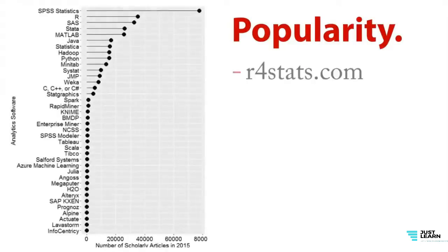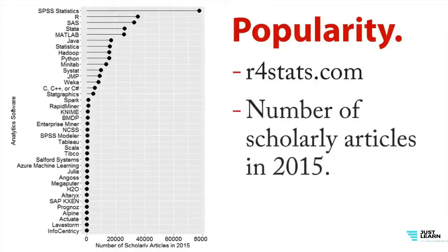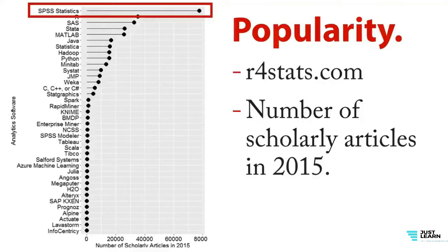One important thing to know is how popular SPSS is. Here's a chart from the excellent website r4stats.com, which shows the number of scholarly articles published in 2015 using various statistical packages and languages. Right at the top is SPSS statistics — SPSS is number one by far in terms of scholarly research.